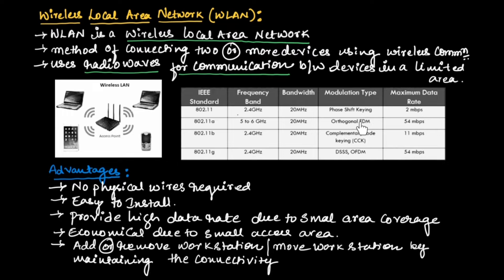802.11a uses orthogonal FDM modulation technique with a data rate of 54 Mbps. 802.11b has a frequency range of 2.4 GHz with a bandwidth of 20 MHz. It uses complementary code keying modulation technique and has a data rate of 11 Mbps.